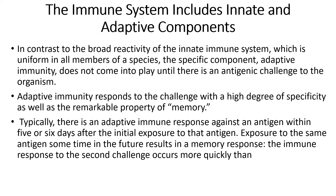In contrast to the broad reactivity of the innate immune system, which is uniform in all members of a species, the specific component is the adaptive immunity. Adaptive immunity is more specific and does not come into play until there is an antigenic challenge to the organism — it essentially remains recessive in our body. When a vaccine is injected, for example, it provokes the activation of antibodies in our body which bind to the antigen. This particularly happens when an antigenic species is introduced.